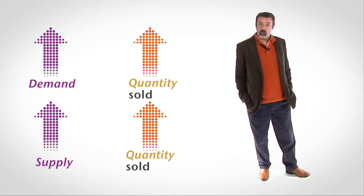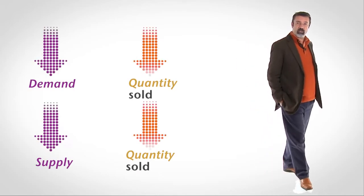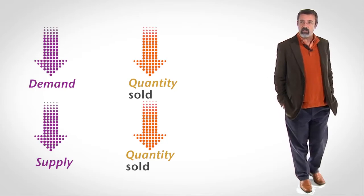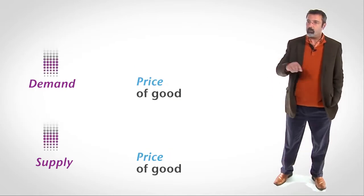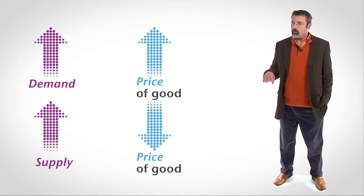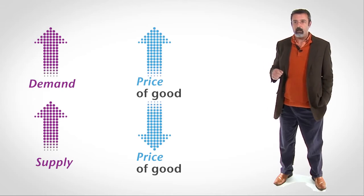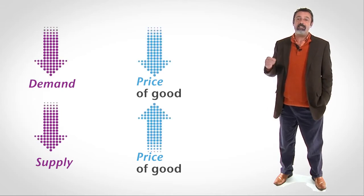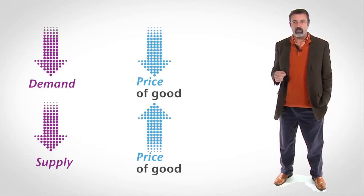What happens when demand and supply change? The quantity sold of a good moves in the same direction as the change in demand or supply. The price of the good moves in the same direction as the change in demand, but in the opposite direction of the change in supply.